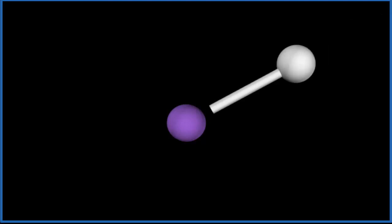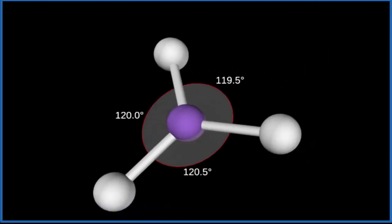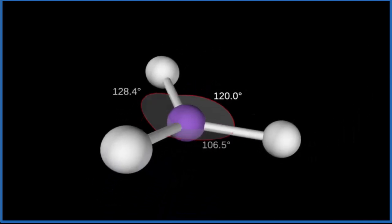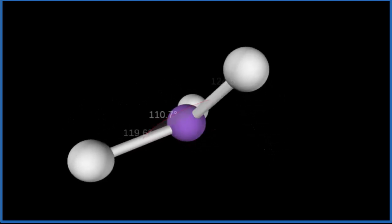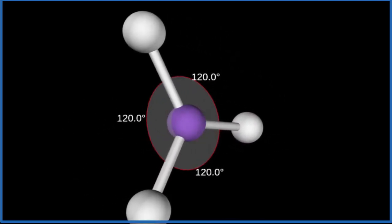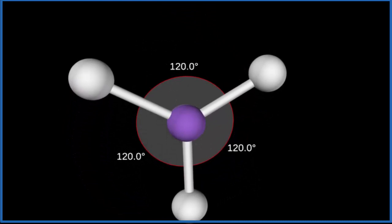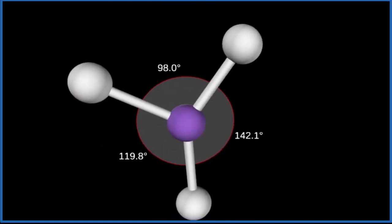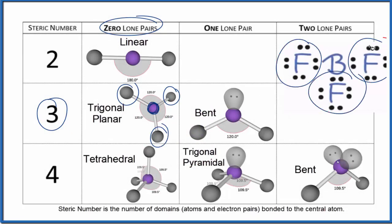Let's add the three fluorine atoms: one, two, and the third one — and they spread out so that everything is in a plane. We have three atoms in a plane — that's the trigonal planar. You can see the bond angles are 120 degrees. So we have our three atoms and zero lone pairs — that's the trigonal planar.